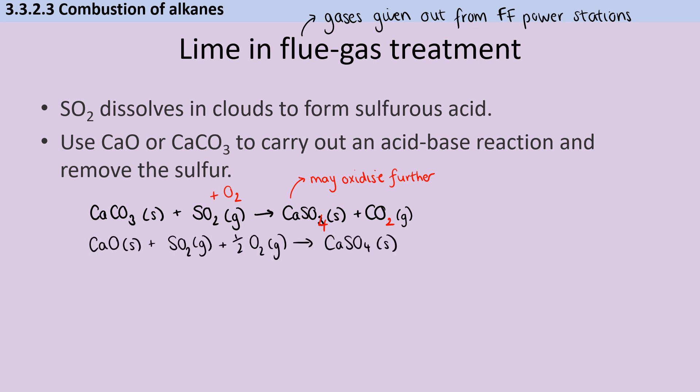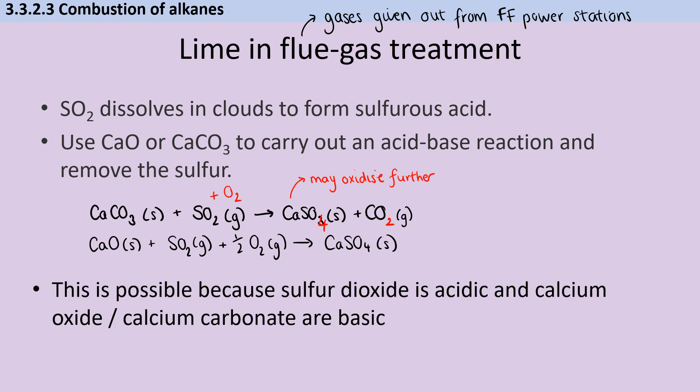Alternatively, calcium oxide can react with sulfur dioxide and some oxygen to just make calcium sulfate without producing any carbon dioxide at all. These two reactions are possible because sulfur dioxide is an acidic gas and calcium oxide and calcium carbonate are both basic.